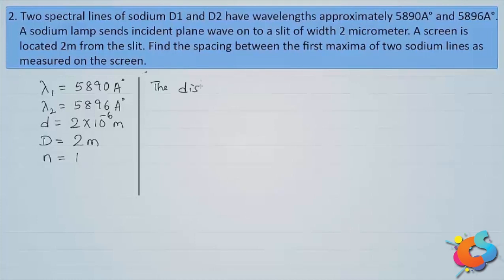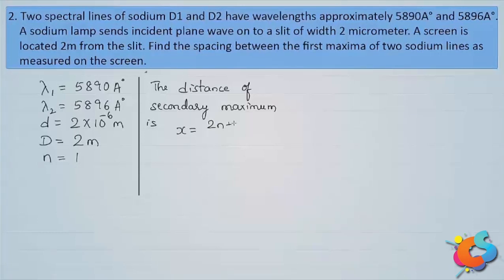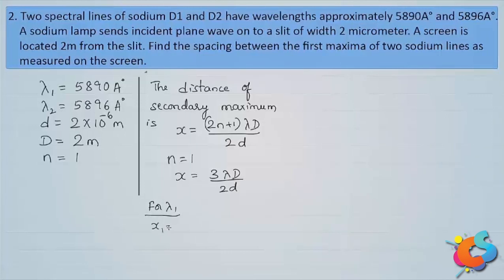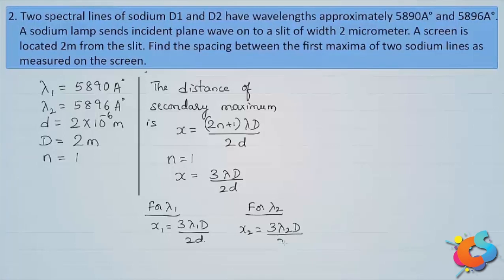The distance of the secondary maximum from the center is given by x = (2n+1)λD / 2d. For the first maximum with n=1, this becomes x = 3λD / 2d. For the first wavelength λ₁, the distance is x₁ = 3λ₁D / 2d. Similarly, for λ₂, the distance of the first maximum from the center of the fringe pattern is x₂ = 3λ₂D / 2d.